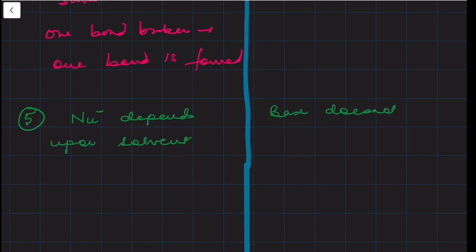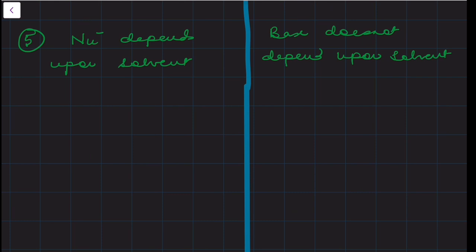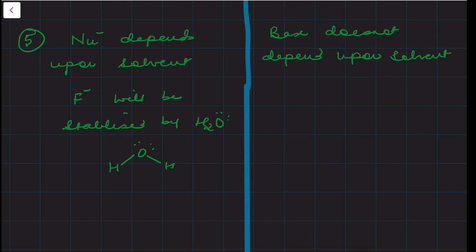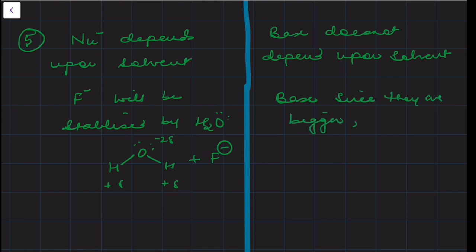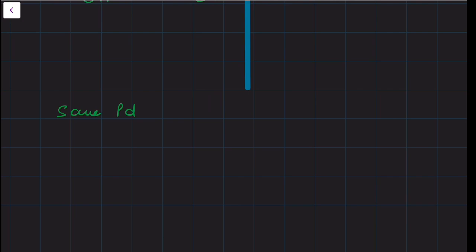Right, so this is one way to identify whether a reaction is nucleophilic substitution or elimination. Nucleophile depends upon the solvent — the substitution reaction will depend upon the solvent — but the base does not depend upon solvent. For example, if you take F⁻, it will interact with water to get stabilized. Water has oxygen with partial negative charge and hydrogen with partial positive charge, so F⁻ gets stabilized by the partial positive charge of the hydrogen atom. So a nucleophile will always get stabilized by the solvent. Now if you look at a base, bases are very bulky; their charge density is very low because their size is very large, so solvent will not play any role — solvent has no effect on them.